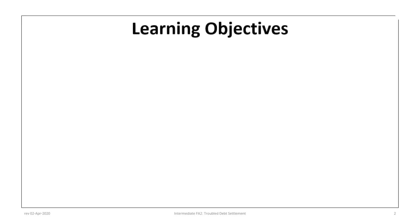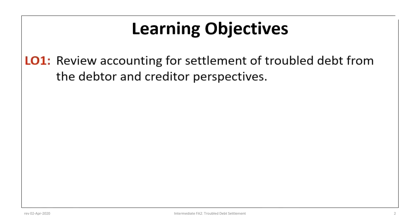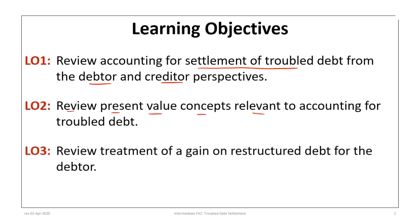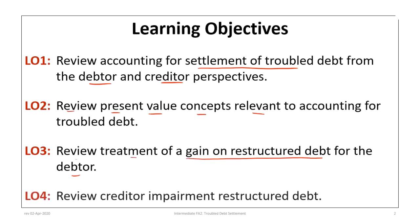This tutorial has four learning objectives. The first objective is to review accounting for settlement of troubled debt from both the debtor and creditor perspectives. The second learning objective is to review and apply present value concepts relevant to accounting for troubled debt. The third objective is to review the treatment of a gain on restructured debt for the debtor. And the fourth learning objective is to review the creditor impairment of restructured and settled debt.